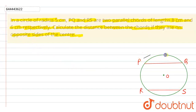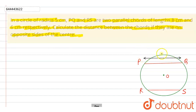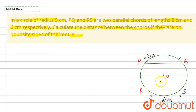The length of chord PQ is 8 centimeters total, and the length of chord RS is 6 centimeters. Now we need to find the distance between these two chords.